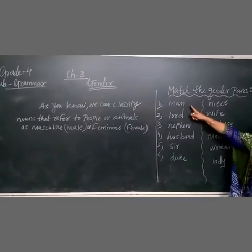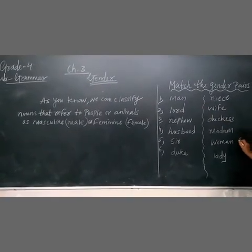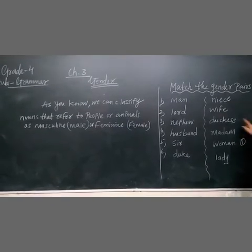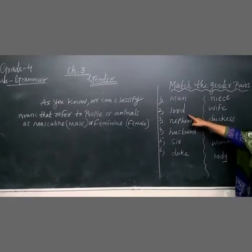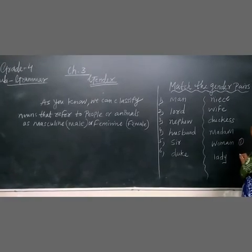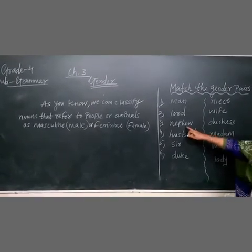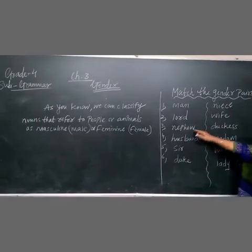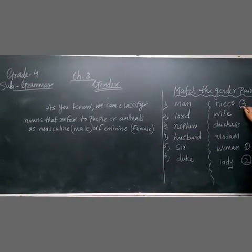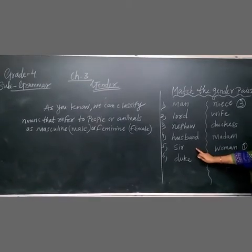Number one: man — man corresponds to woman, spelled W-O-M-A-N. Number two: lord — lord corresponds to lady, spelled L-A-D-Y. Number three is nephew — that corresponds to niece, spelled N-I-E-C-E. Number four: husband.